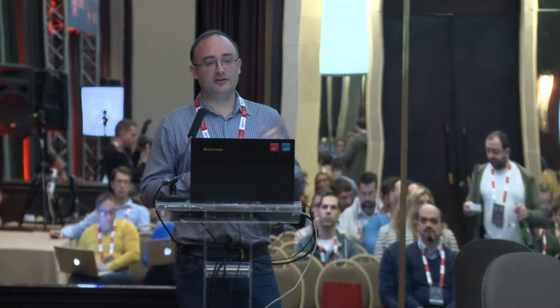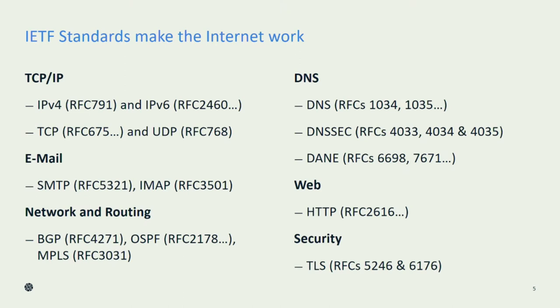Some of these you may be familiar with — some well-known ones. IPv4 underpins the internet, so TCP/IP and IPv4, IPv6. This slide is just slightly out of date because IPv6 has only just been officially standardised and that's RFC 8200, which came out only about a month or two months ago. So it's actually now after 22 years an official standard — it's been only an experimental protocol up until now. Email, IMAP, BGP — we've already discussed this morning — and then of course DNS, DNSSEC, DANE, web, HTTP, TLS, and there are many, many more.